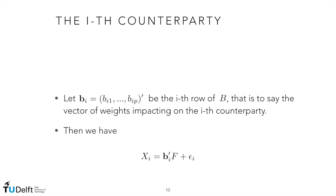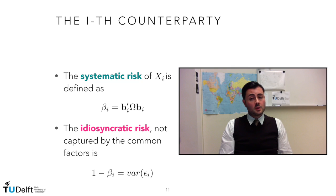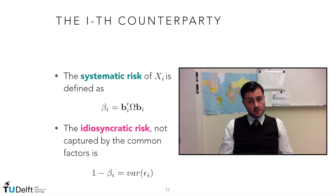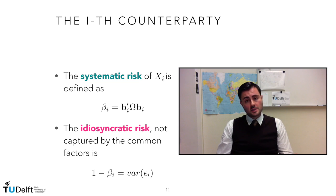If we define the vector of weights bi for counterparty i, we can easily obtain xi using the formula shown. Remember that thanks to the standardization we have for the different marginals, the variance of xi is equal to 1. This allows us to easily compute the systematic risk and the idiosyncratic risk.